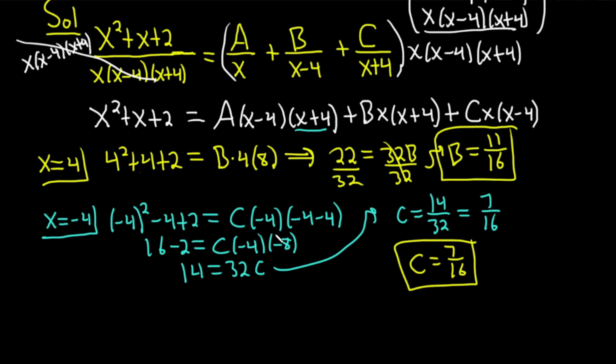The last number we can plug in that will make things go away is 0. So let's do that. So x equals 0. This time on the left-hand side, x squared plus x plus 2, it's going to be easier. It'll just be 0 squared plus 0 plus 2. So we'll just get 2. On the right-hand side, the B will go away because you get B times 0. And that's 0. Same thing with the C. You'll get C times 0. So we're just left with the A term.